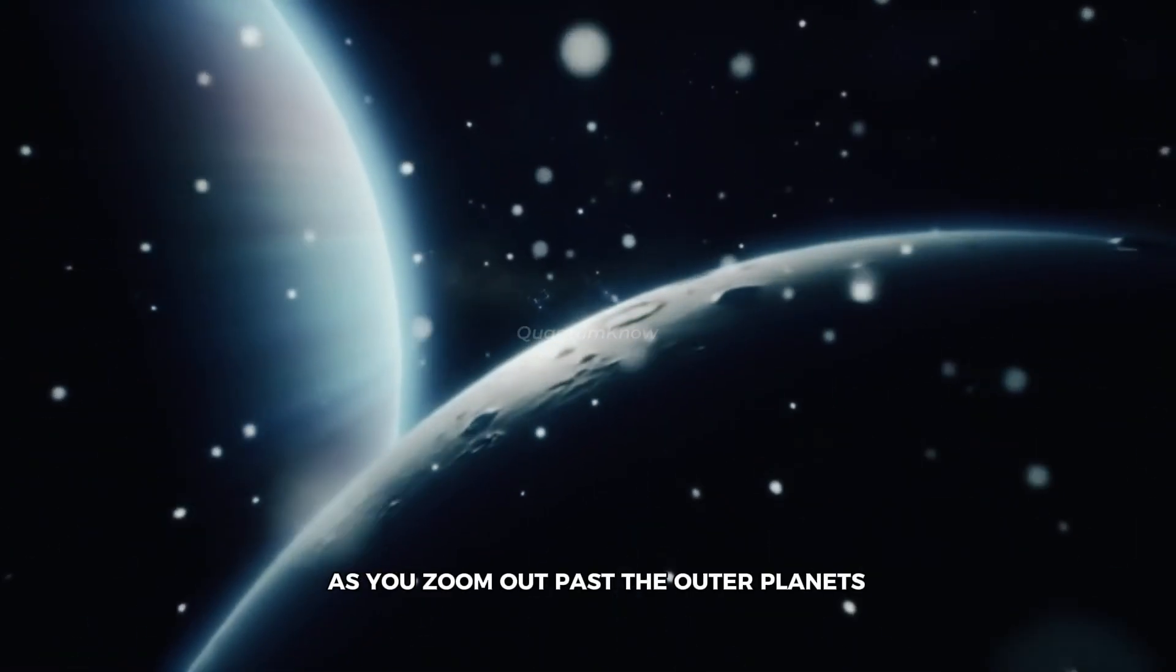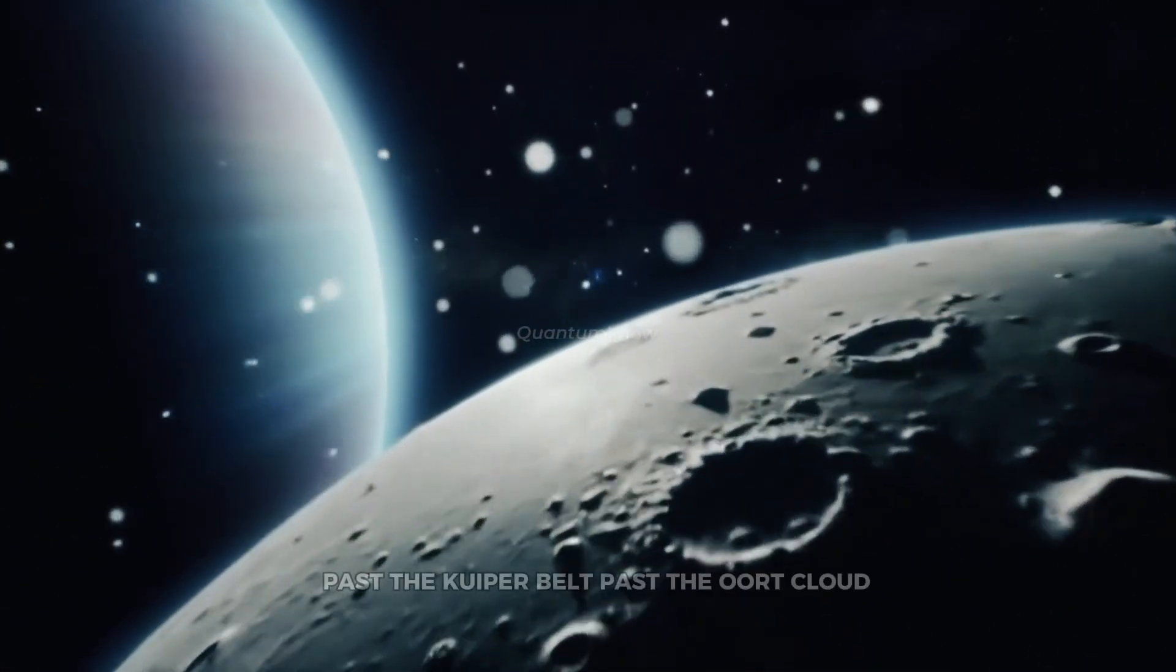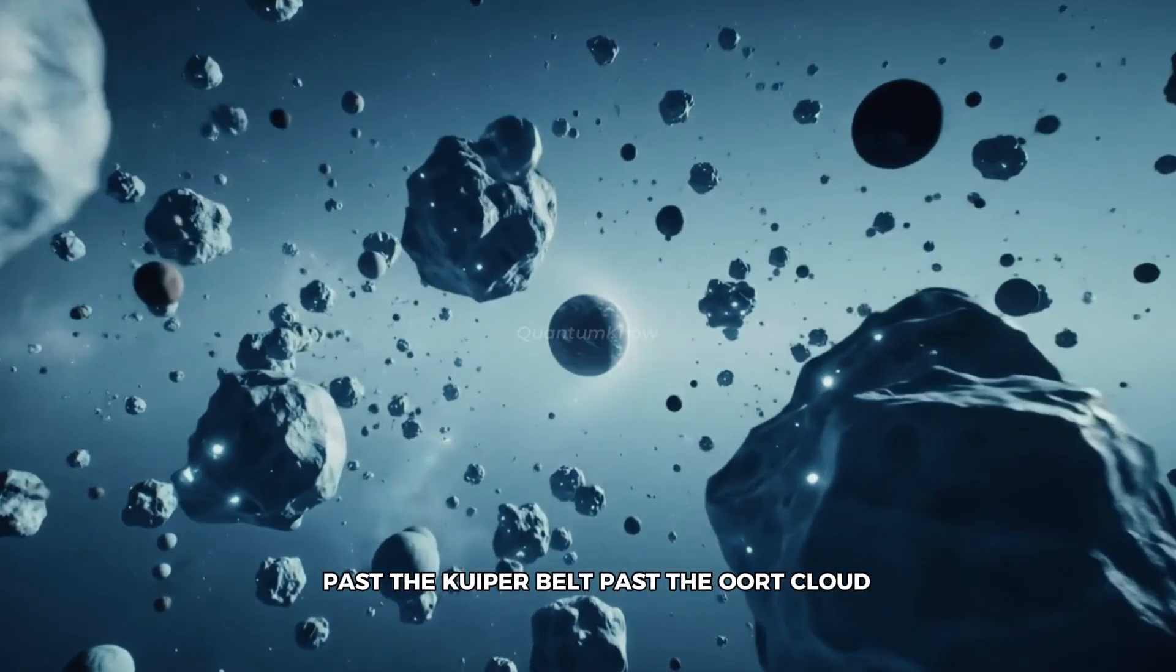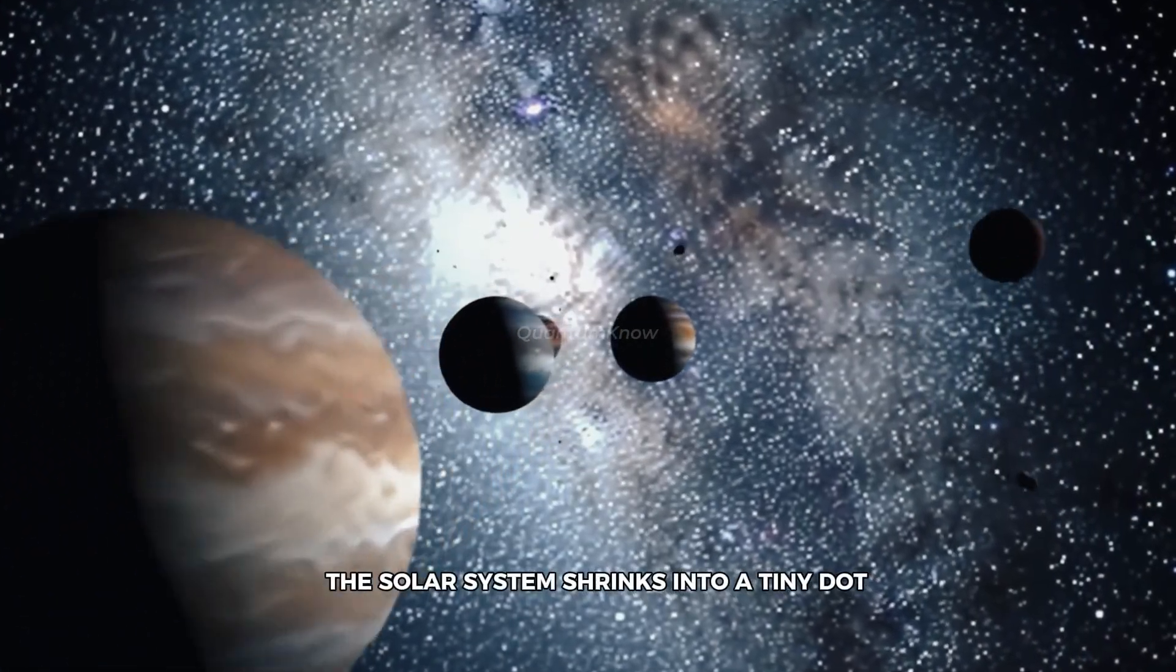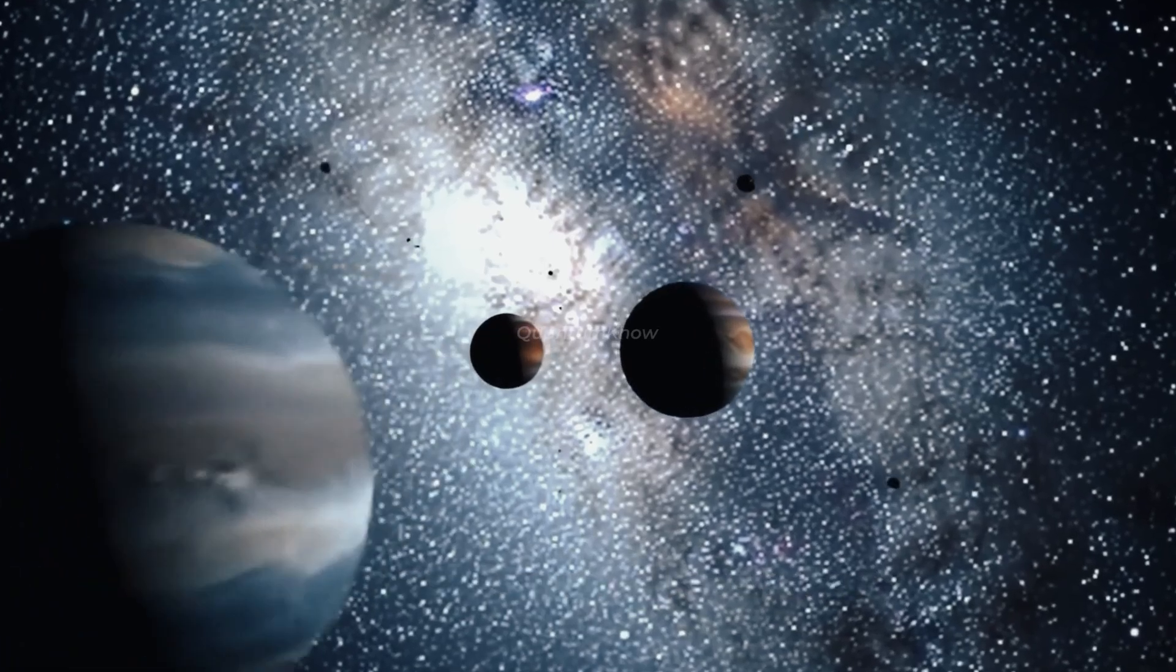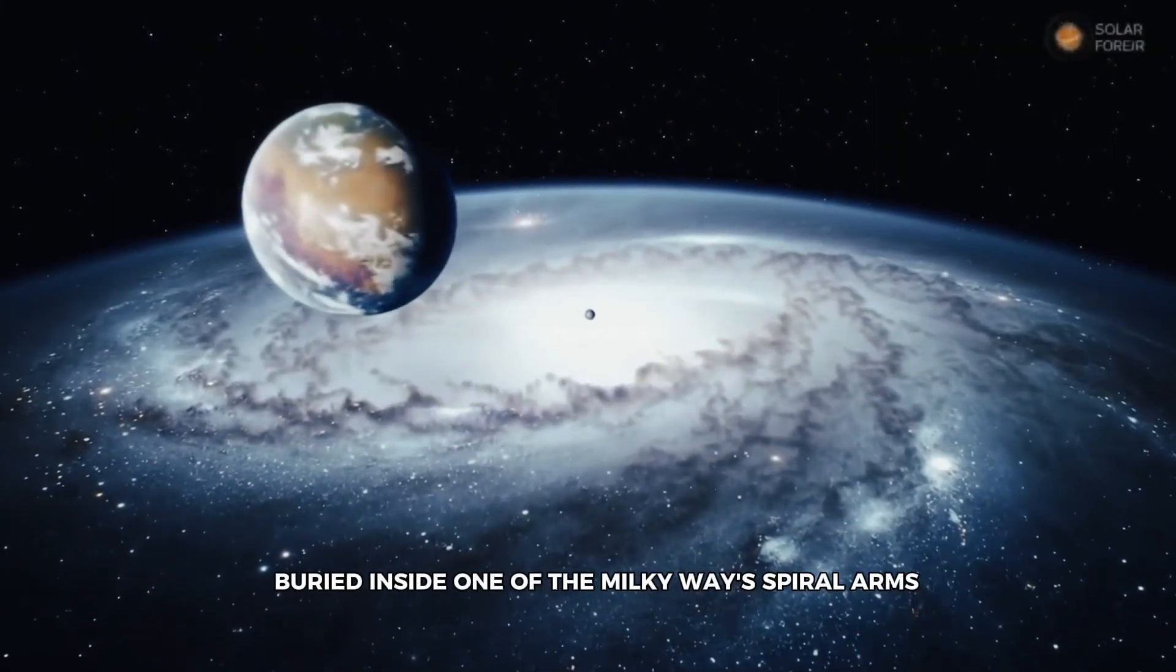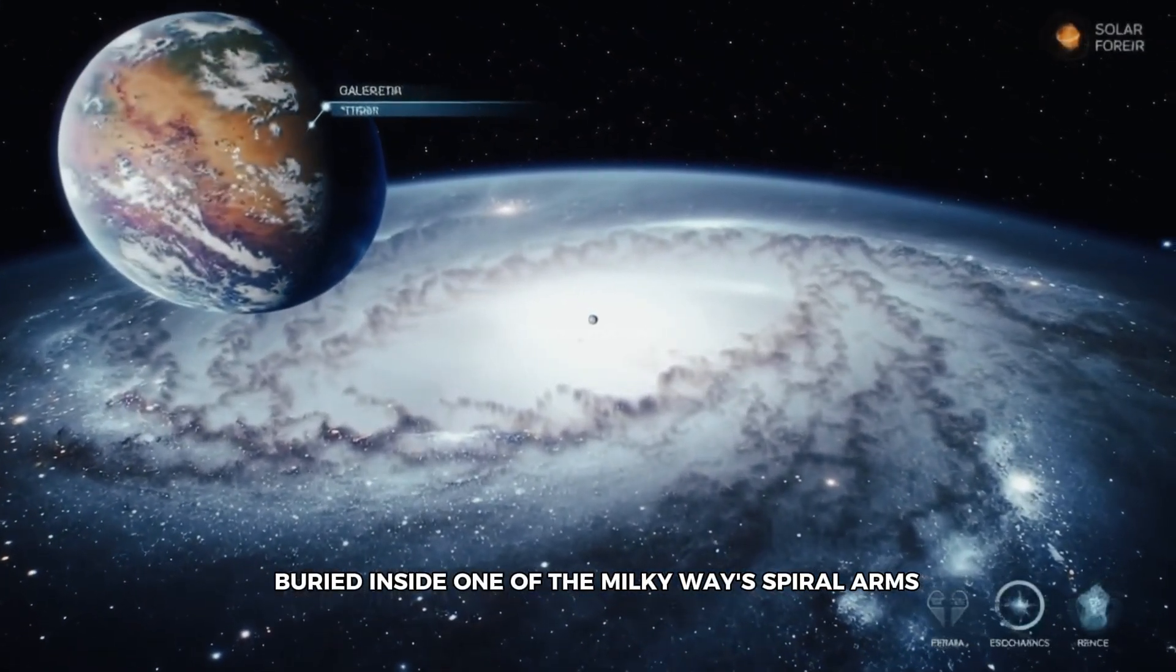As you zoom out past the outer planets, past the Kuiper Belt, past the Oort cloud that stretches almost a light year wide, the solar system shrinks into a tiny dot, a speck, buried inside one of the Milky Way's spiral arms.